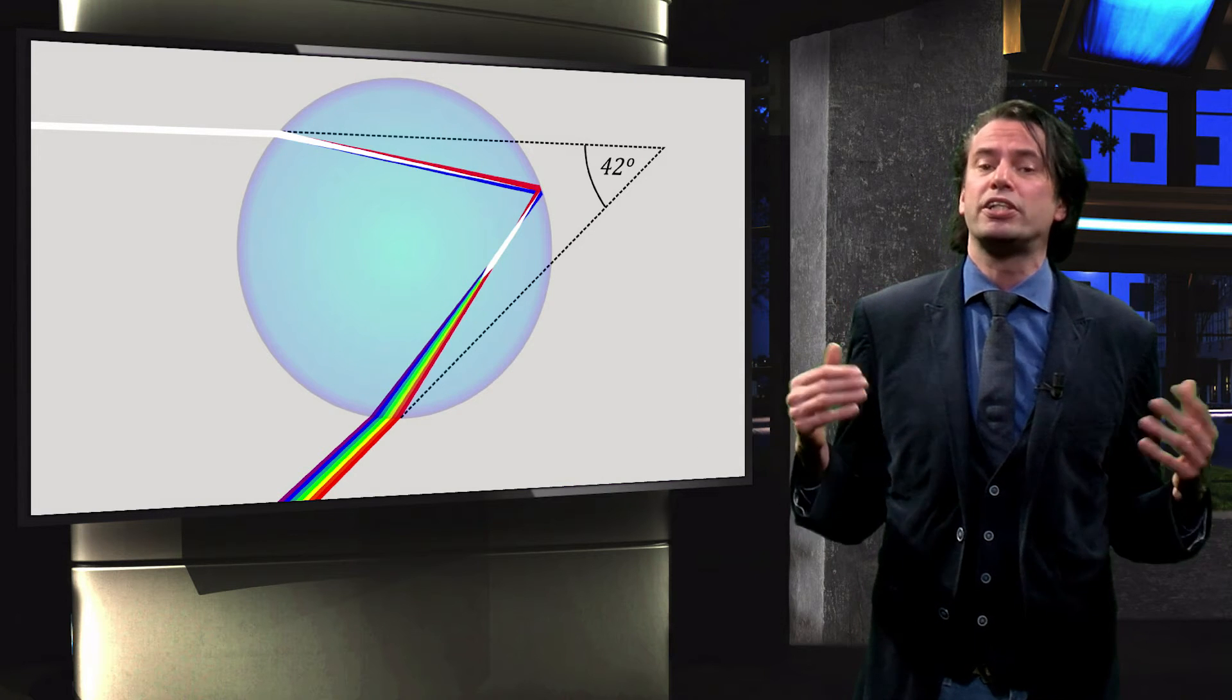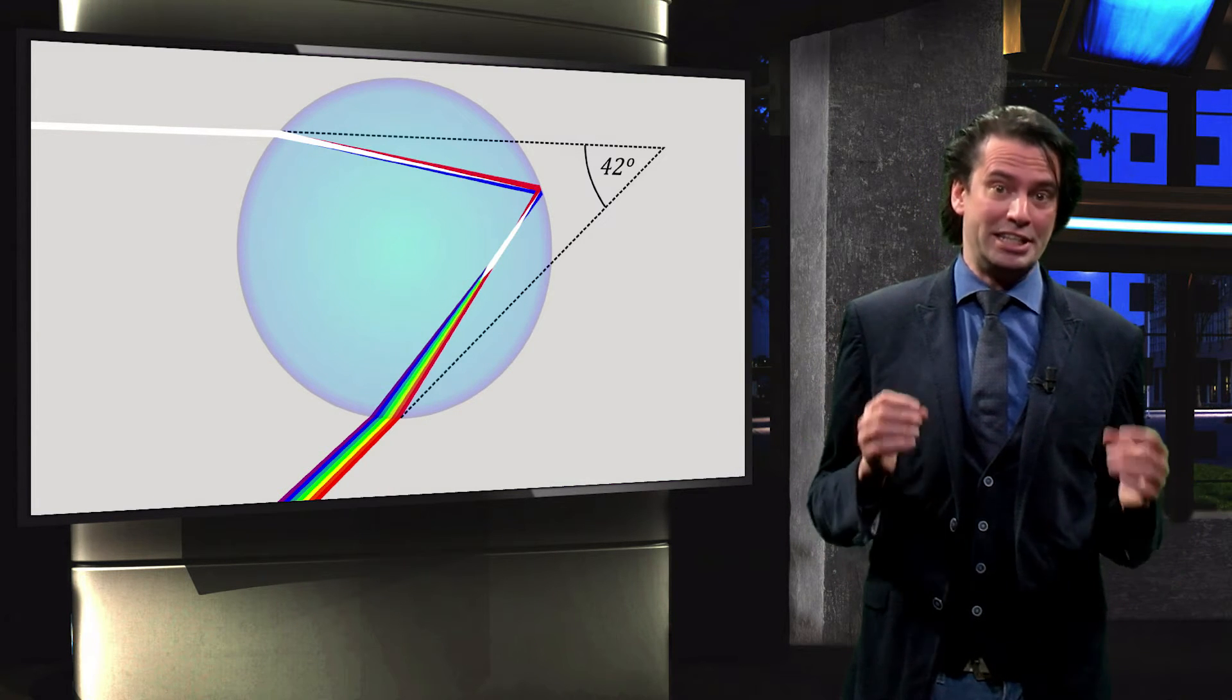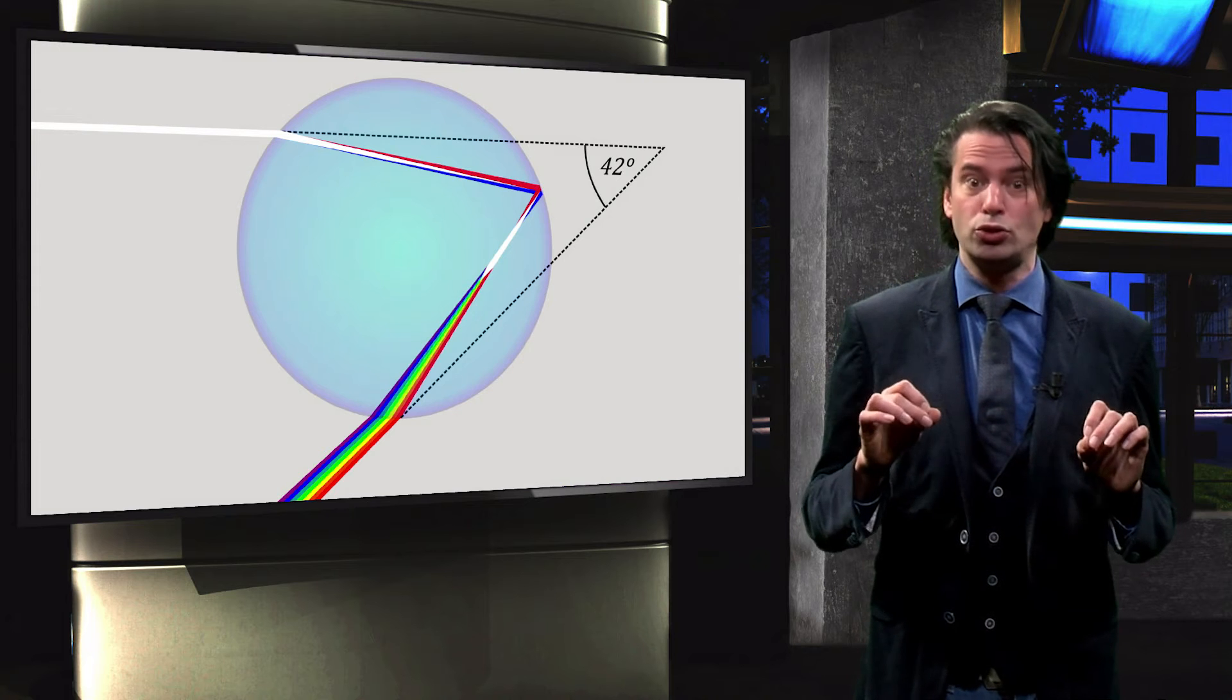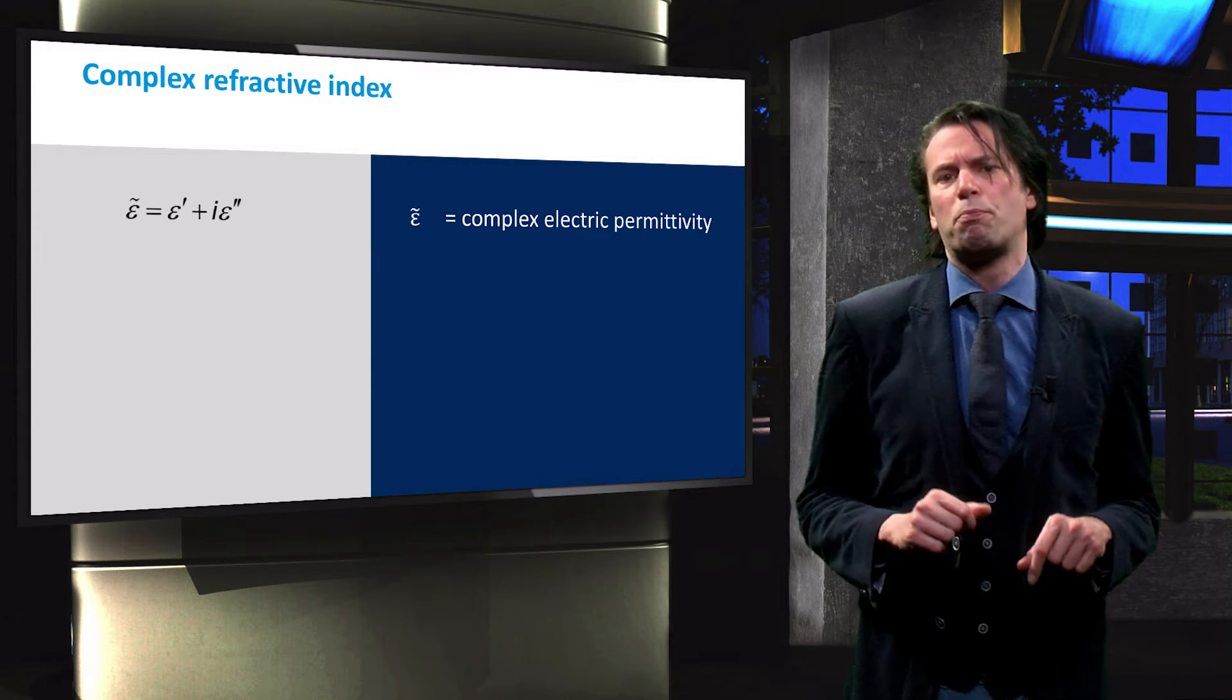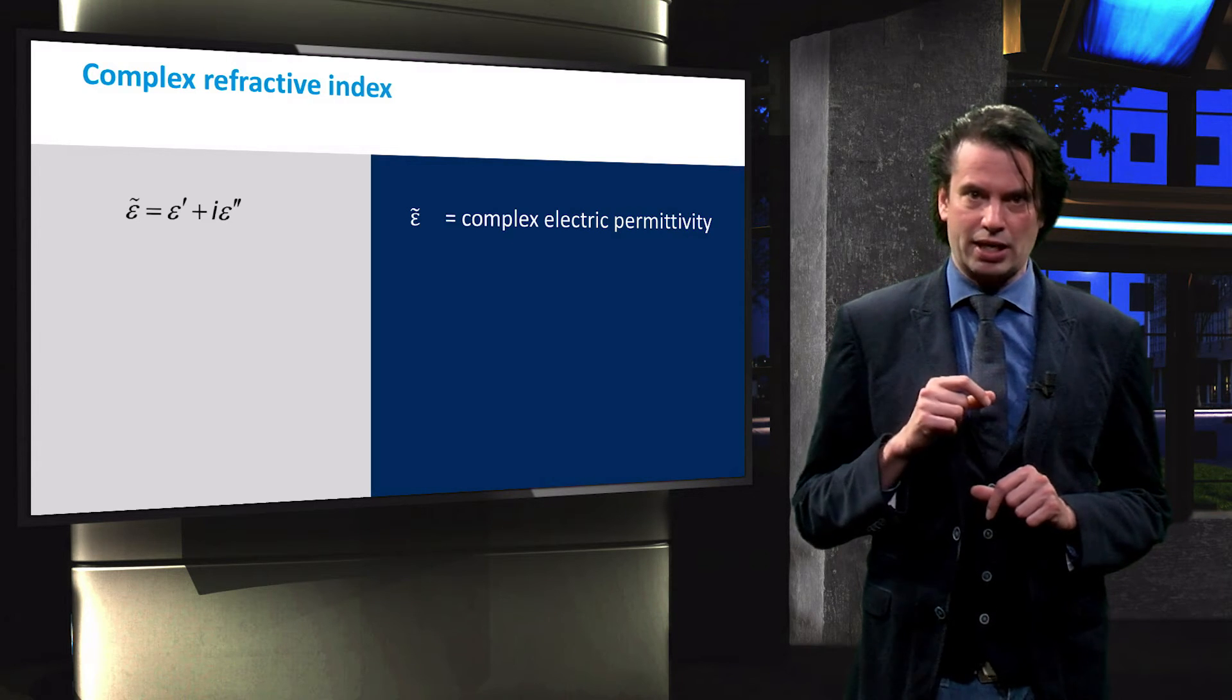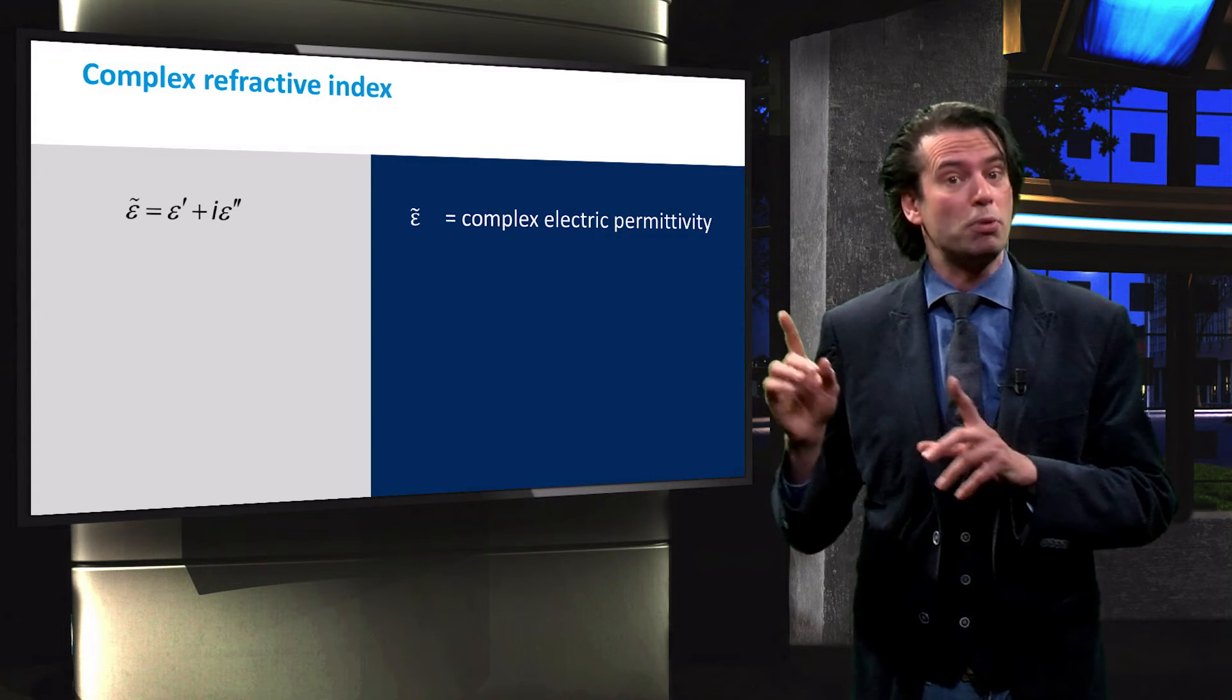So far we have implicitly assumed that the media through which light propagates are non-absorbing. Materials used for solar cells, however, need to absorb light to function properly. Therefore, we will now discuss the full refractive index to include absorption as well. In general, the optical properties of an absorbing medium are described by a complex electric permittivity epsilon. This complex electric permittivity consists of a real part denoted by epsilon prime and an imaginary part denoted by epsilon double prime.